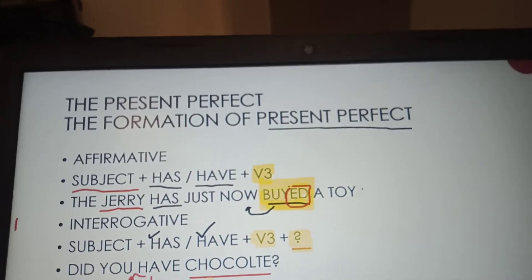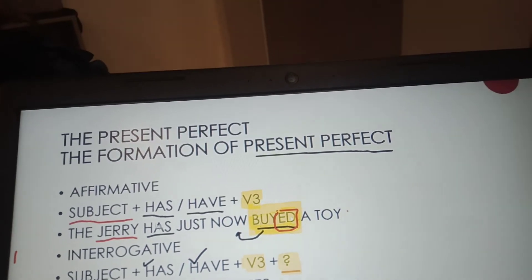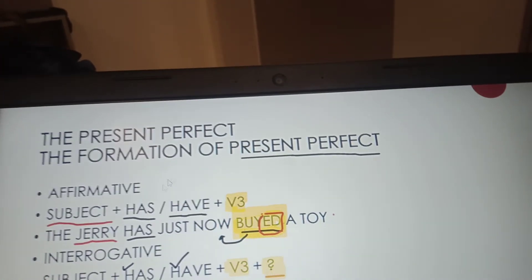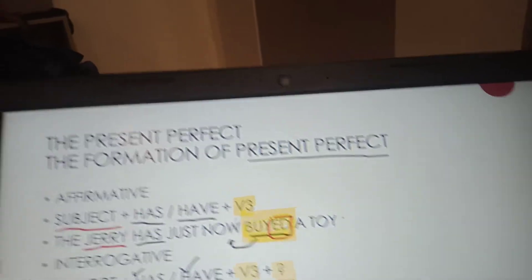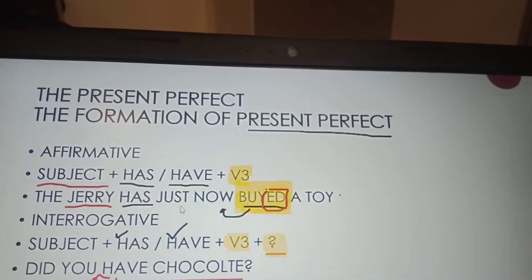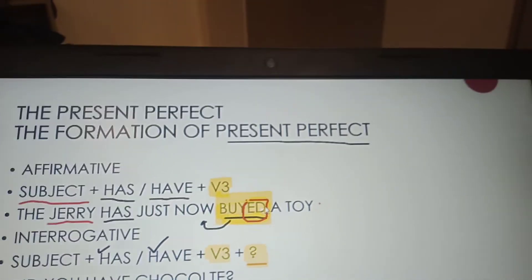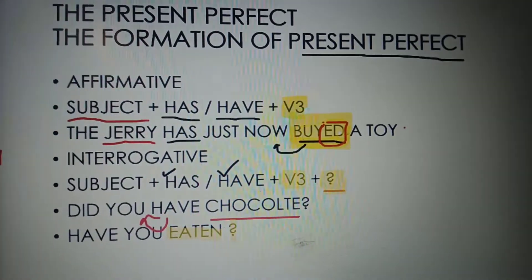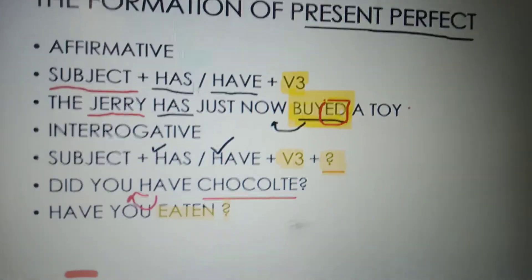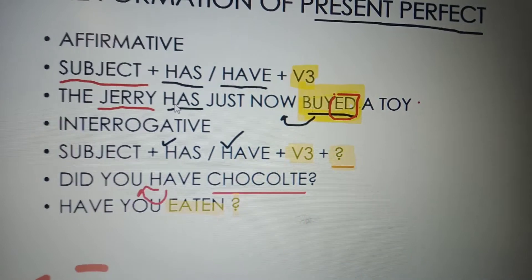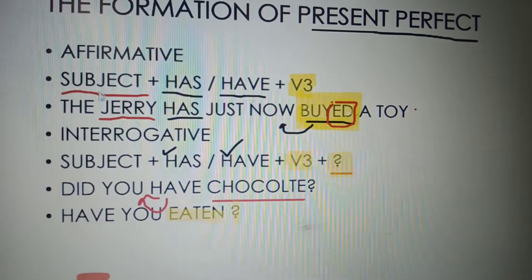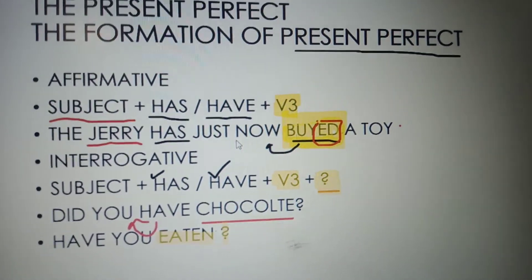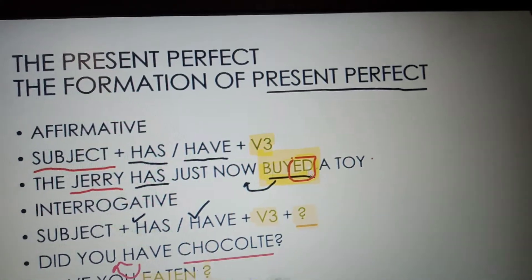In the affirmative form: Subject + has/have + V3. 'Has' is used for singular subjects and 'have' for plural subjects. For example, 'Jerry has just now bought a toy.' Jerry is the subject, and since Jerry is singular, we use 'has.'